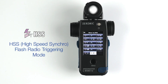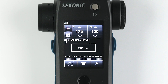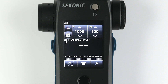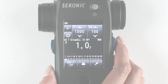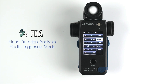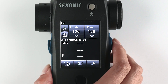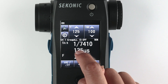HSS High Speed Synchro Flash Radio Triggering Mode — this mode is used when metering lights using HSS. Flash duration analysis radio triggering mode — this mode is used to measure and graph the flash duration of strobe lighting.